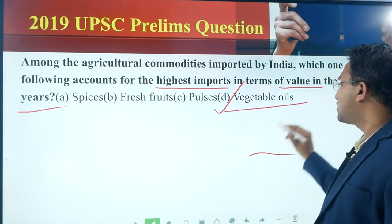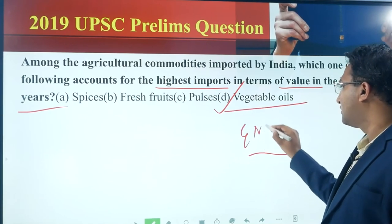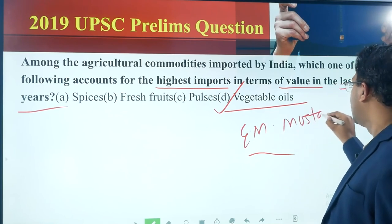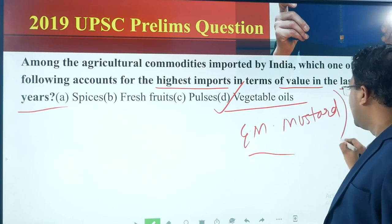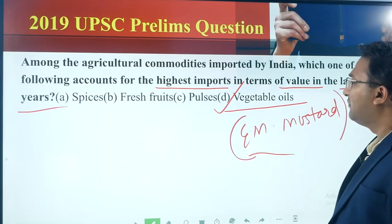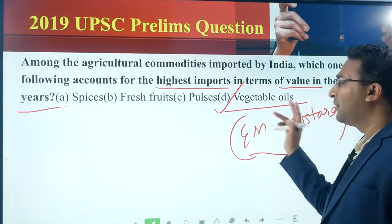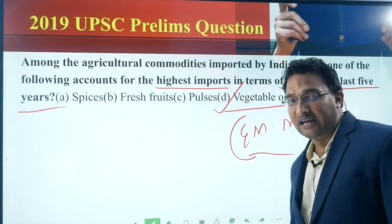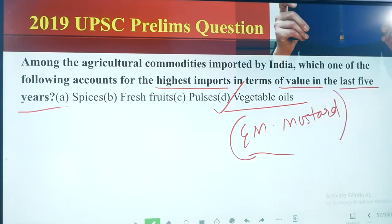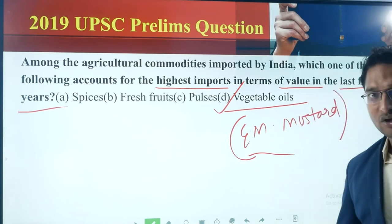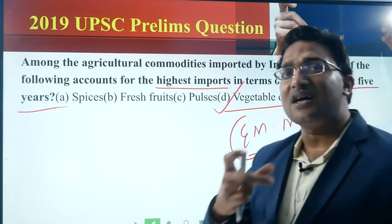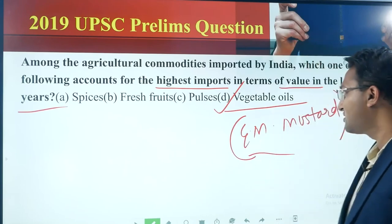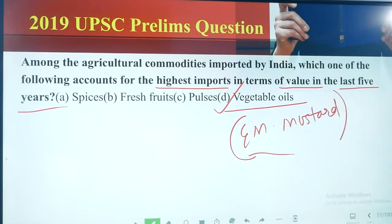This question was asked because last year genetically modified mustard was in the news, and in that background, the news came frequently that vegetable oil is one of the largest imported items in India. Any question asked in the examination has some logic — the logic to this question was the news about GM mustard.